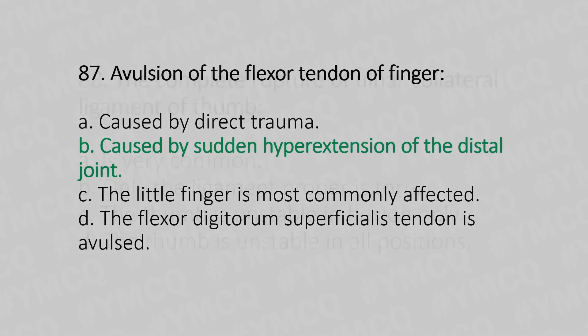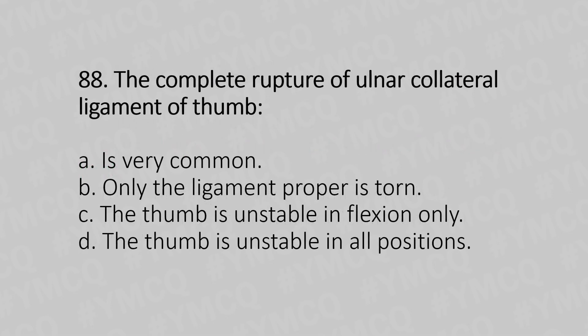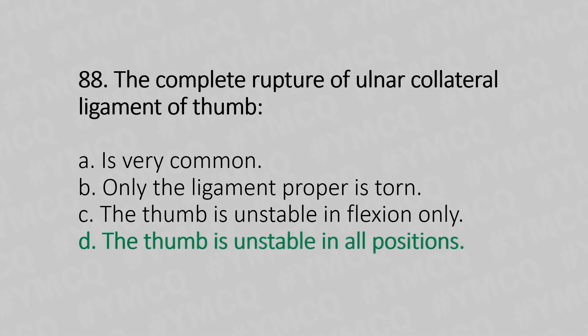Let's move to question number 88. The complete rupture of the ulnar collateral ligament of the thumb: Option A, is very common. Option B, only the ligament proper is torn. Option C, the thumb is unstable in flexion only. Option D, the thumb is unstable in all positions. The answer is Option D, the thumb is unstable in all positions.